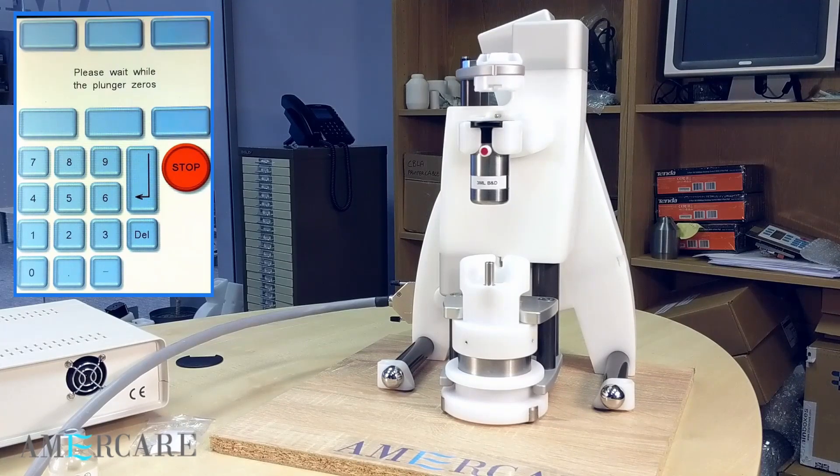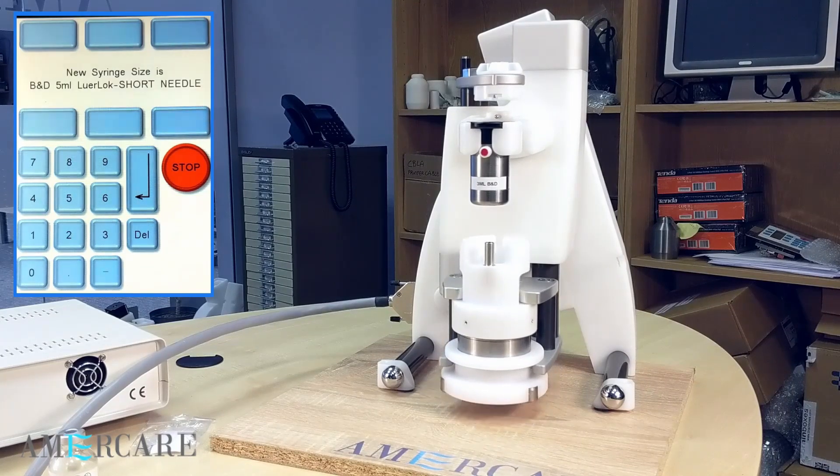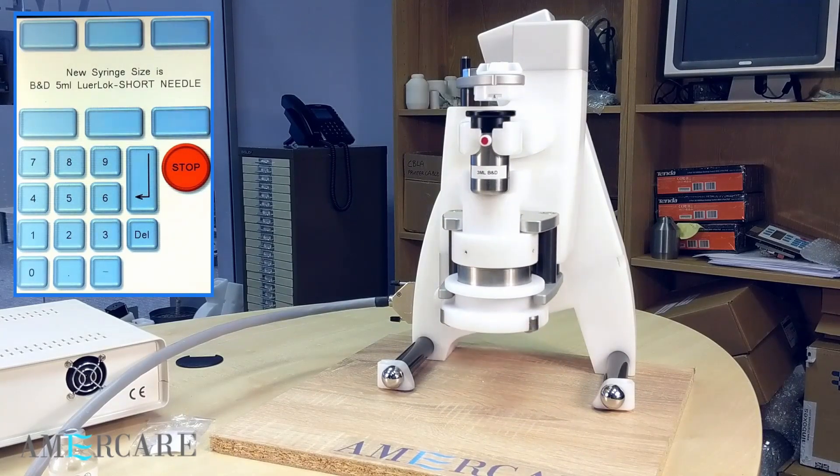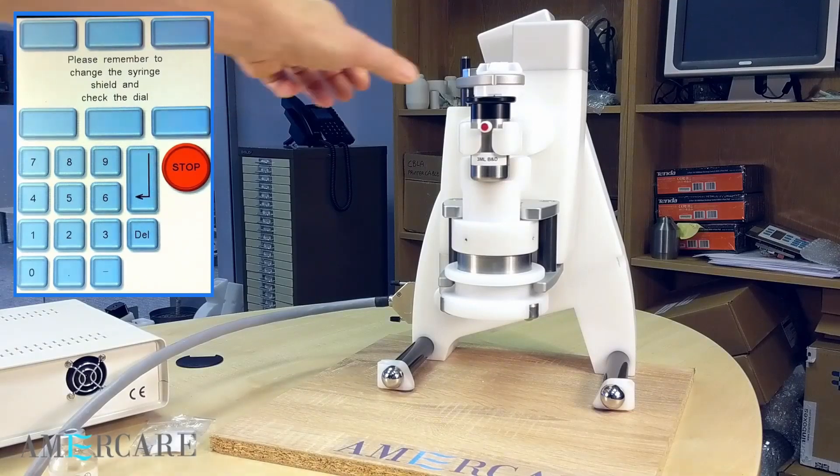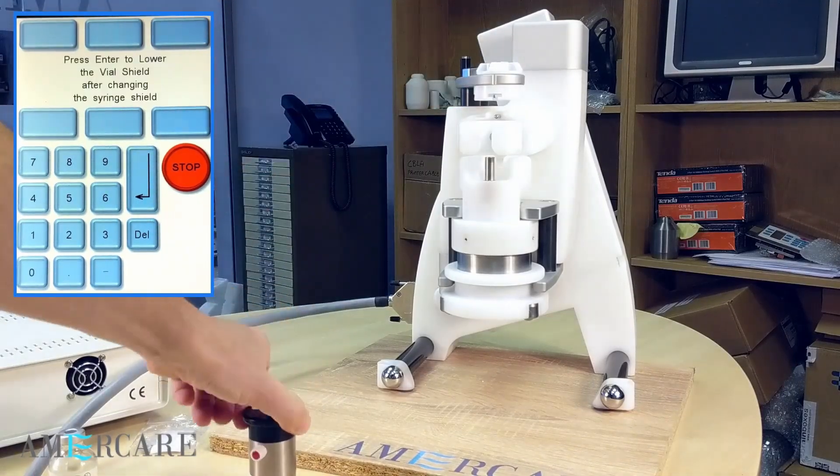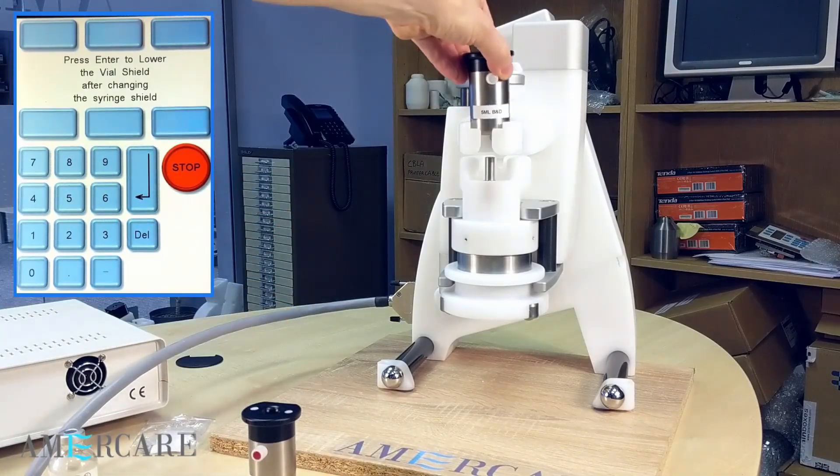The plunger will now zero. The carriage will raise, lifting the existing shield up to aid removal. Lift the existing shield out and fit the new shield.